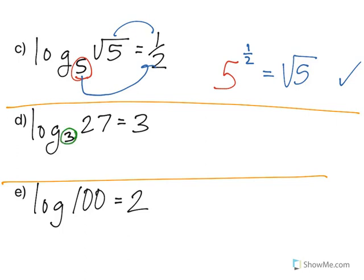In letter D, base of 3, raise it to the third power equals 27. If you are a visual learner, put these arrows down. Write it down and put the arrows down.